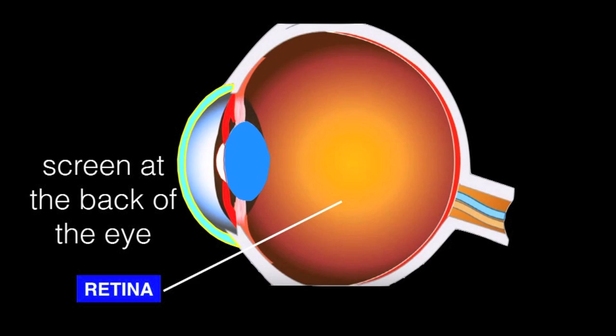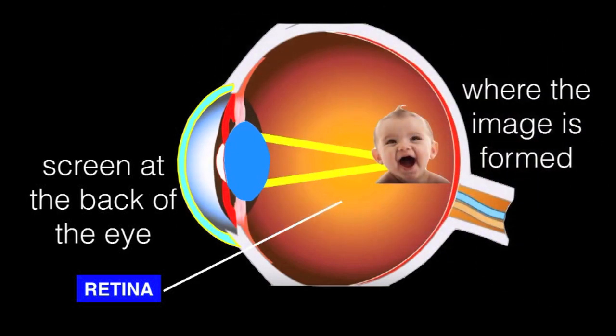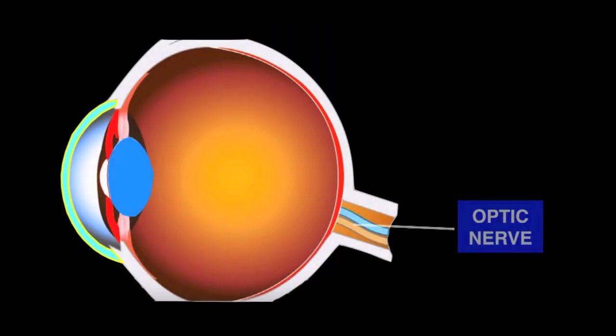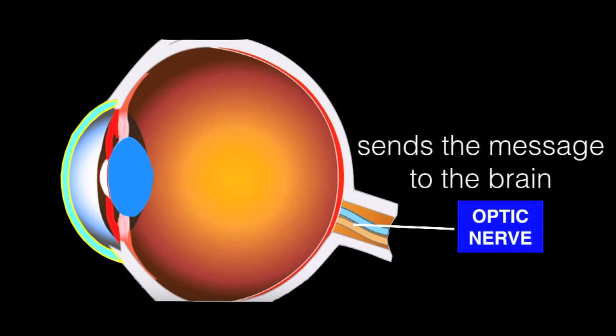It is in the retina where the image is formed. This part is called the optic nerve. The optic nerve sends the message to the brain.